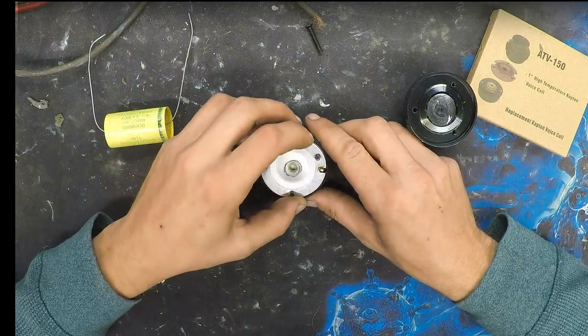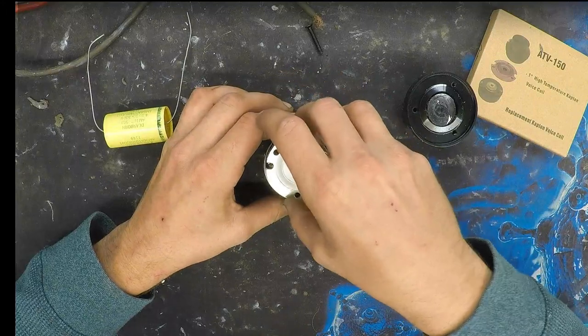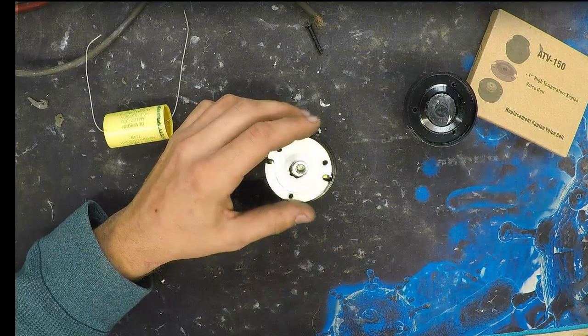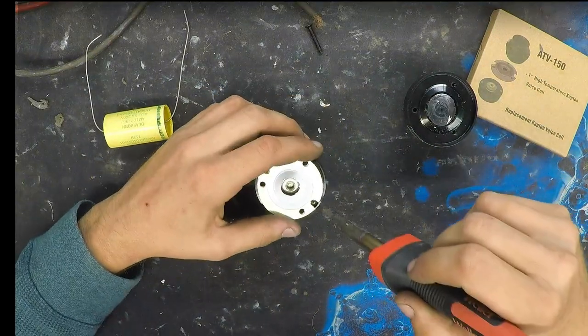So this does need to be replaced, so I'm going to go ahead and just pry this up like that. Now it's floating there. I do have the soldering iron ready. I'm going to go ahead and remove one of these tabs, and we're going to go ahead and remove the other tab.